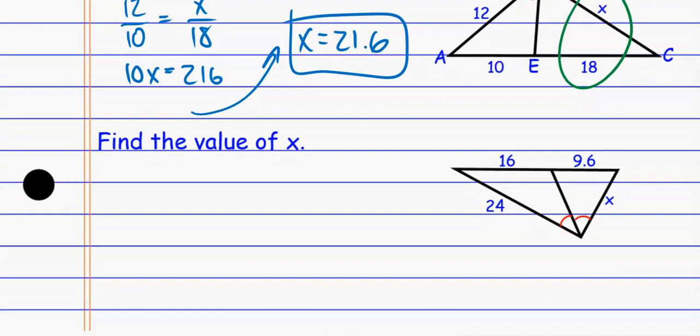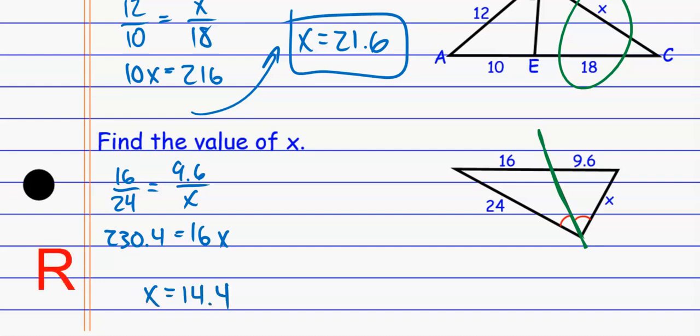If I look at the next one — same kind of thing, though this one's kind of flipped around. I could set up the proportion in different ways. Think about the angle bisector as separating my two ratios: one ratio involves 16 and 24, the other involves 9.6 and X. If I do 16 over 24 — piece over side — then the other must also be piece over side: 9.6 over X. Cross multiplying: 9.6 × 24 = 230.4. Then 16X = 230.4, so dividing by 16, X = 14.4.